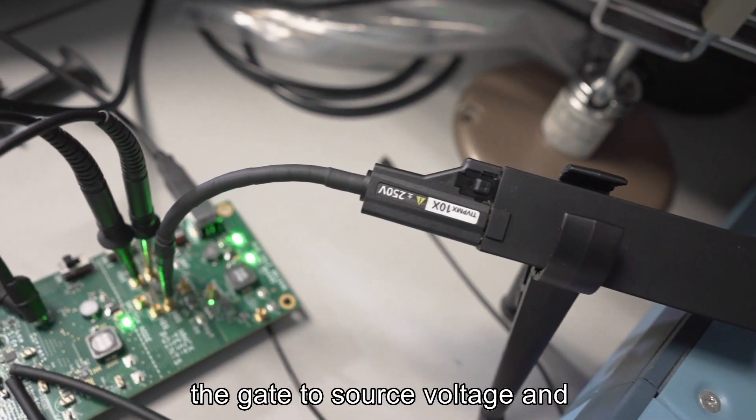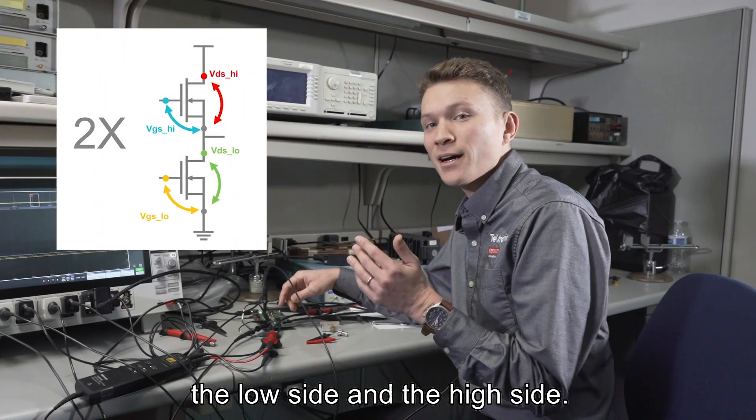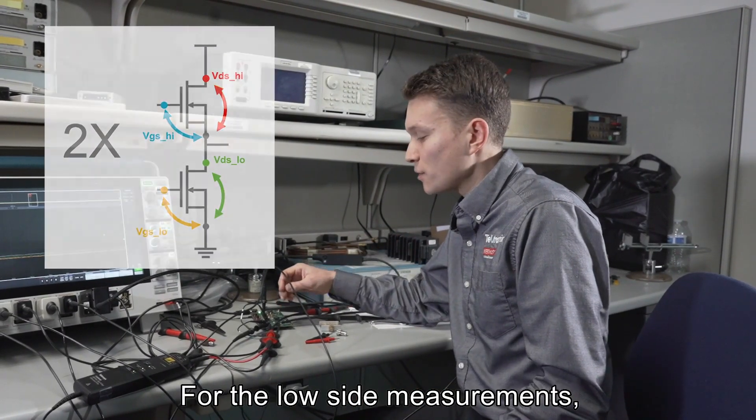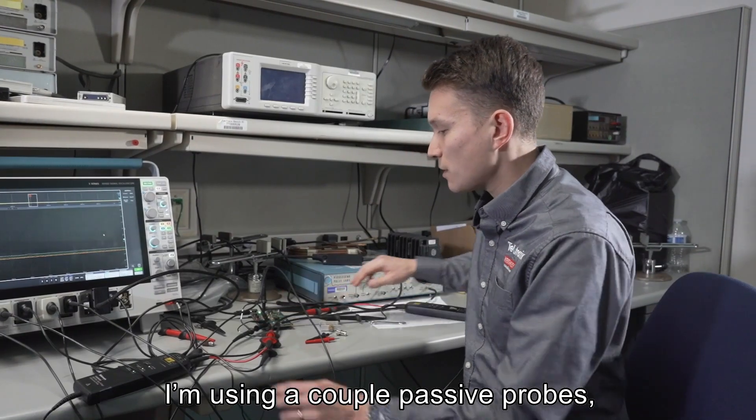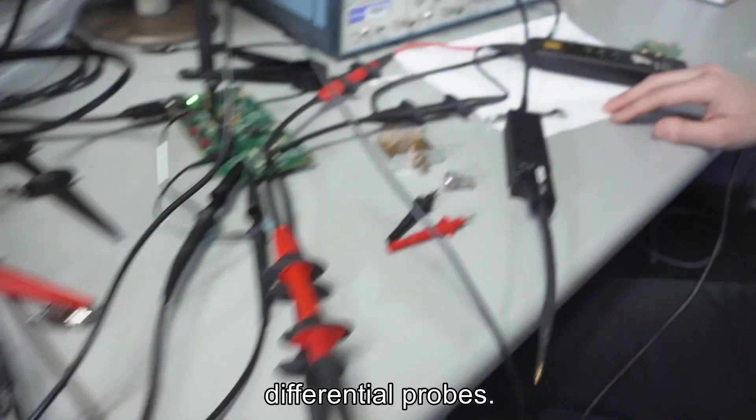What I'm measuring is both the gate to source voltage and the drain to source voltage of both the low side and the high side. For the low side measurements, I'm using a couple passive probes, and for the high side measurements, I'm using some low attenuation differential probes.